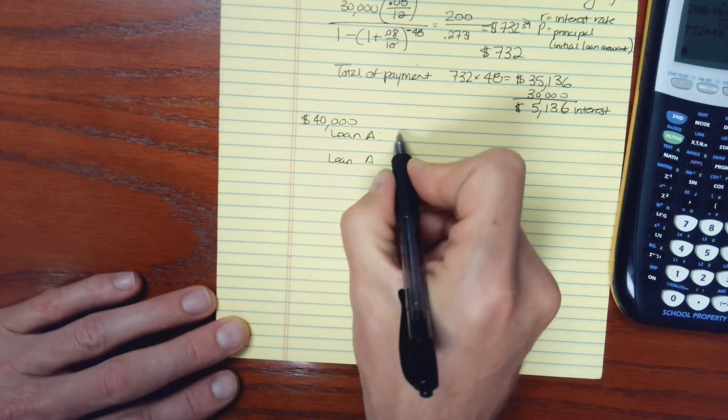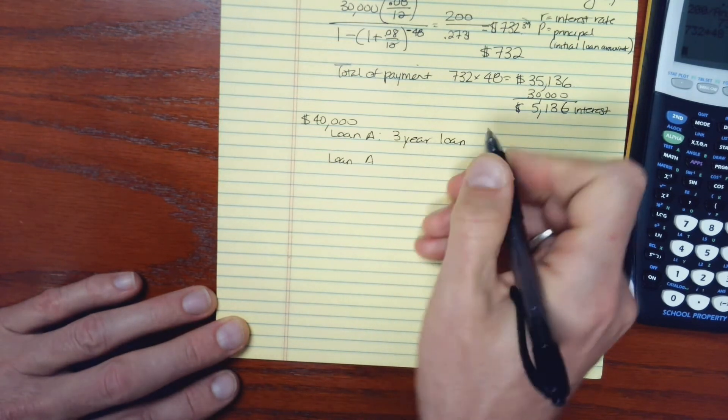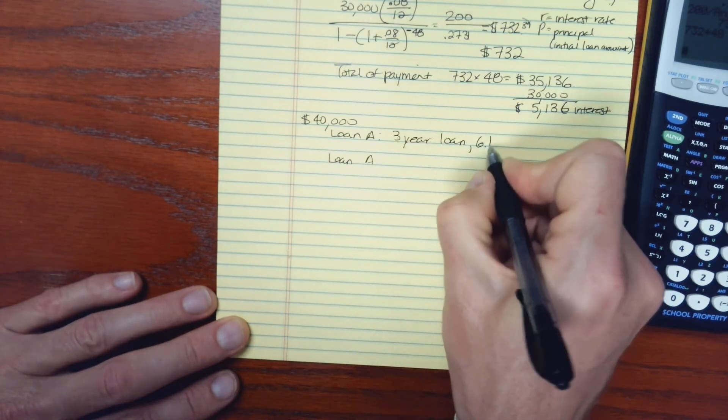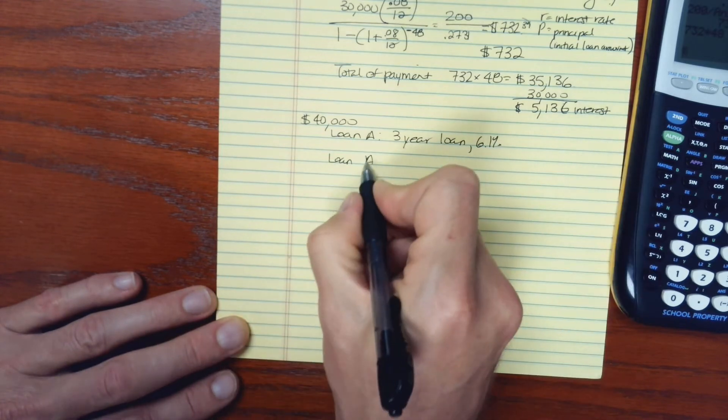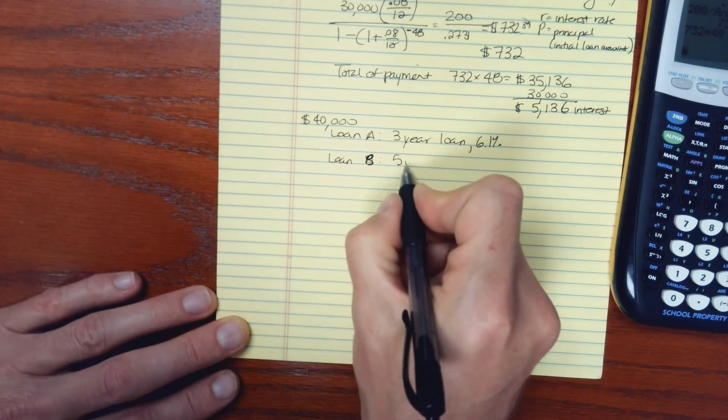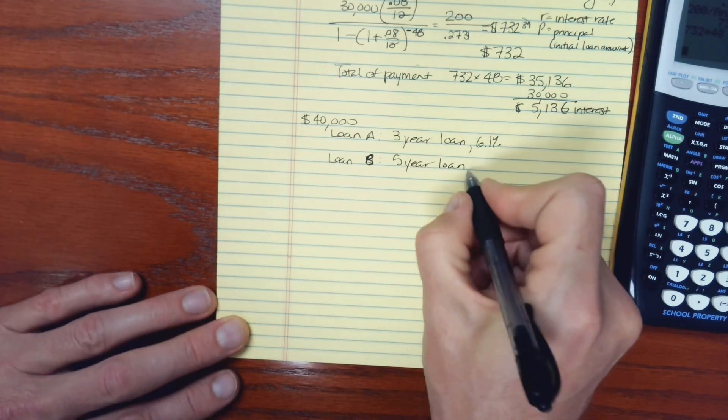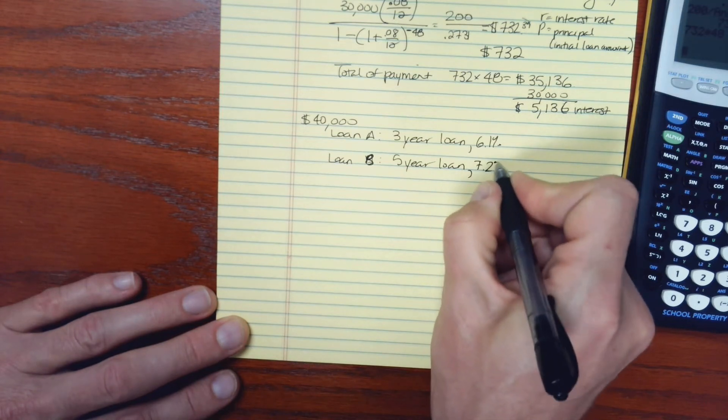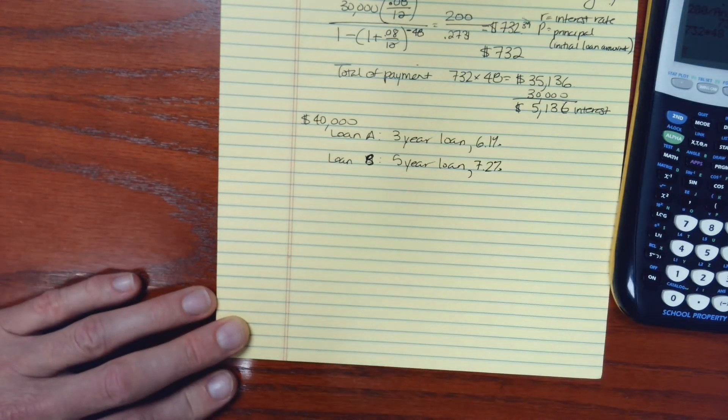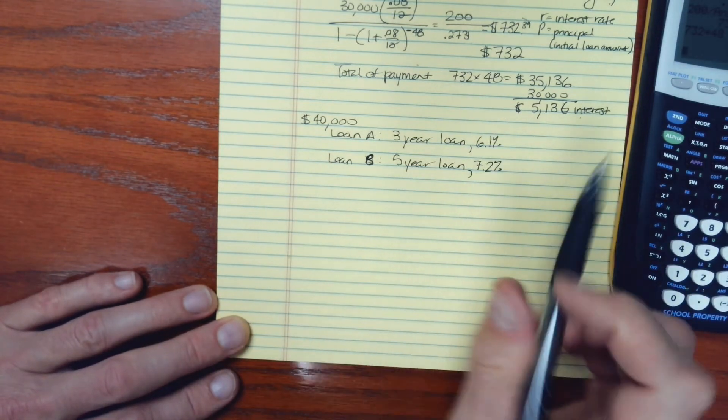And loan A is a three-year loan with a 6.1% interest. And option B is a five-year loan but with a higher interest rate, 7.2%. So how do these compare overall, both in terms of the monthly payment and then the total interest that we'll pay over the course of the loan?